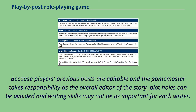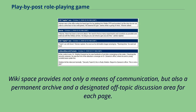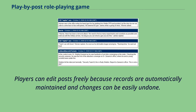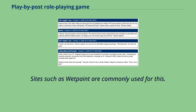A play-by-wiki game is played using wiki software instead of a forum. Because players' previous posts are editable and the game master takes responsibility as the overall editor of the story, plot holes can be avoided and writing skills may not be as important for each writer. Wikispace provides not only a means of communication, but also a permanent archive and a designated off-topic discussion area for each page. Players can edit posts freely because records are automatically maintained and changes can be easily undone. Sites such as Wetpaint are commonly used for this.